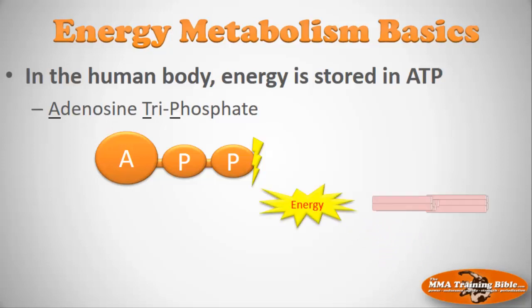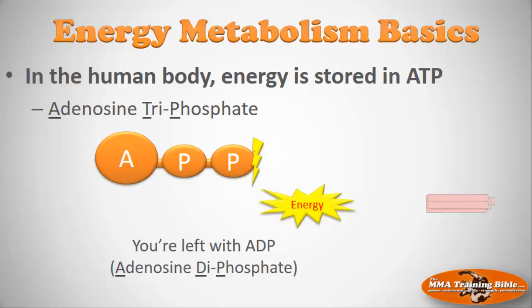Once ATP is broken down, you no longer have adenosine triphosphate — you have adenosine diphosphate, missing that third phosphate. As a result, your ability to create energy and power muscle contraction falls. You need that ATP molecule to continue powering muscle contraction. So if you want to continue exerting high efforts in the cage, you need to continuously generate ATP. The question is: what are the ways we can generate more ATP?